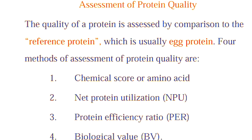Protein quality can be assessed by taking a reference protein, and in most cases the reference protein is egg. There are methods by which protein quality is assessed: chemical score or amino acid score, net protein utilization, protein efficiency ratio, and biological value.